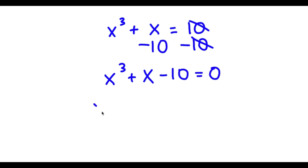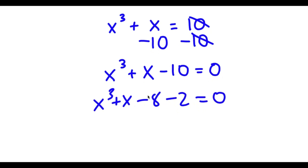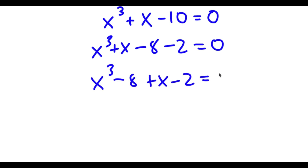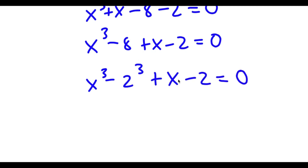Now negative 10 is the same thing as negative 8 minus 2. So I'm going to switch the order and rewrite this as x to the power of 3 minus 8 plus x minus 2 is equal to 0. Now 8 is the same thing as 2 to the power of 3, so I have x to the power of 3 minus 2 to the power of 3 plus x minus 2 is equal to 0.